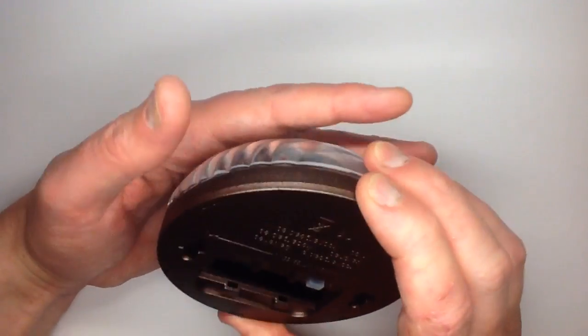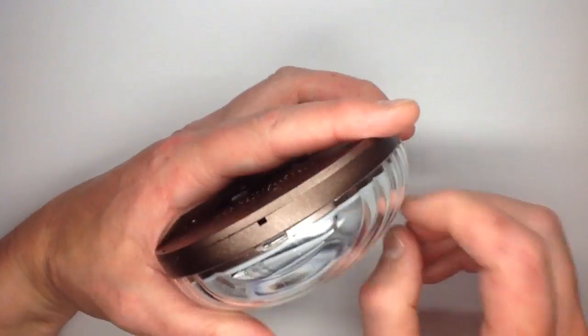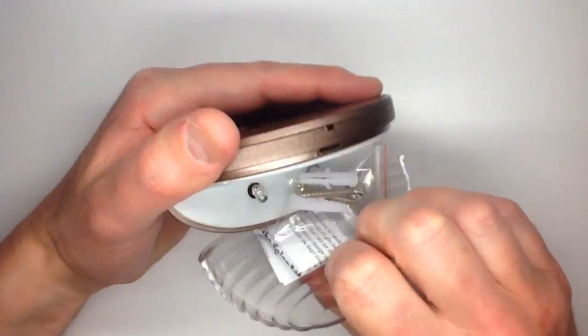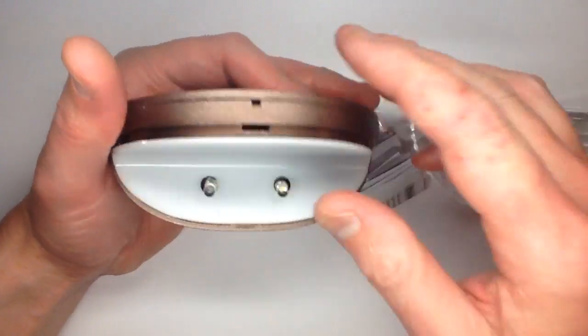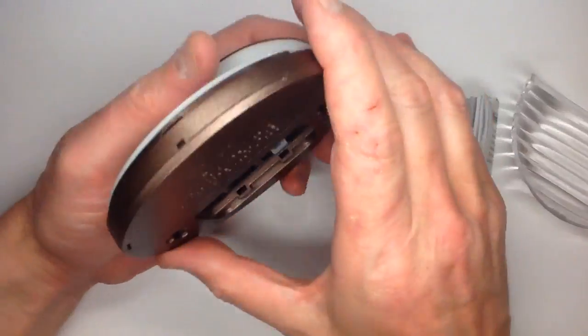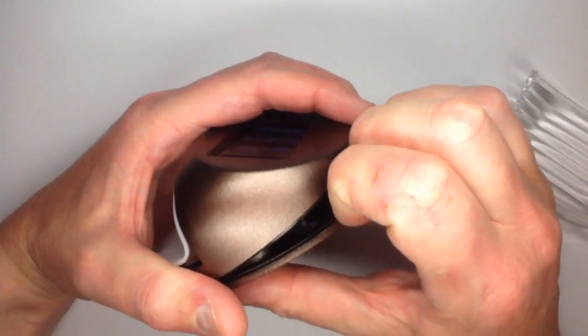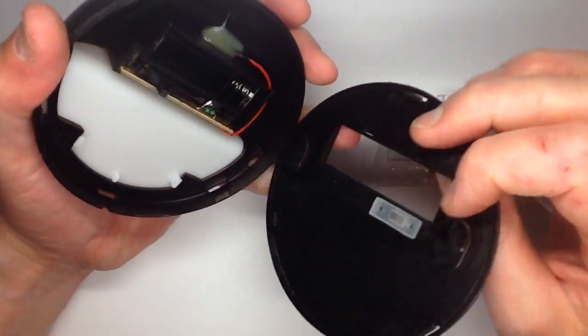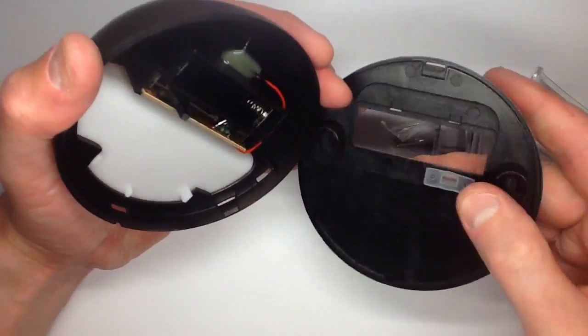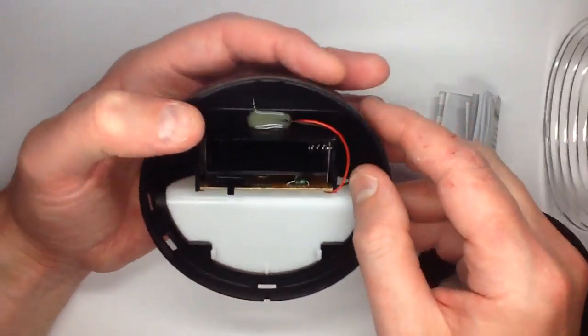So I don't see any screws. I can see hardware under here so I'm guessing that comes off. Is this just clipped together? Yes it is. It's not clipped together particularly strongly. There's the silicone rubber cover, there's the switch, there's the circuit board.